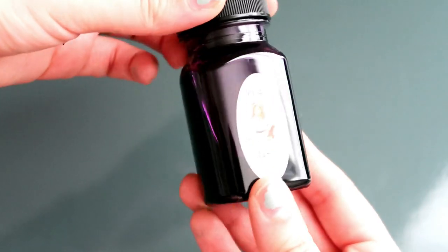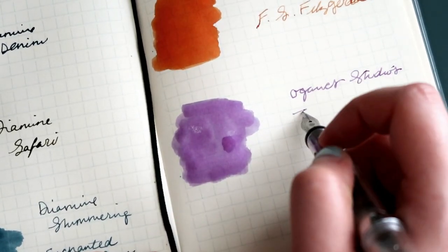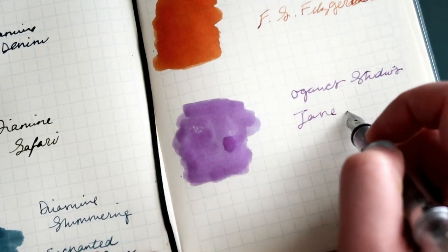And I also have Jane Austen Violet. It's a pretty purple, but I think I prefer darker ones. Still, I was happy to add this one to my collection.